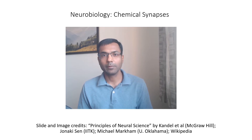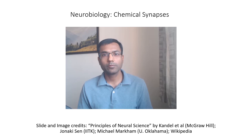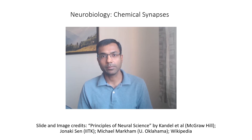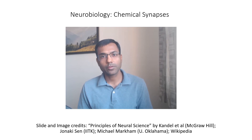Hi everyone, welcome back to neurobiology. In this series of videos we have been looking at synapses, the contacts between neurons. In the last video we looked at electrical synapses, in which the two neurons are directly connected to each other. An electrical signal in the form of charged ions can flow directly from one neuron to the next.